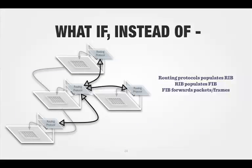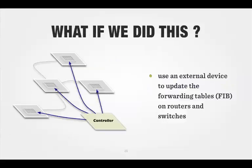Going back to my original diagram — where I talked about routing protocols that populate the RIB, the RIB populates the FIB, and the FIB decides what is the forwarding path for packets and frames — what if, instead of this, I had a central controller to update the FIBs on the routers and switches? What would that look like? Would that still be a network?